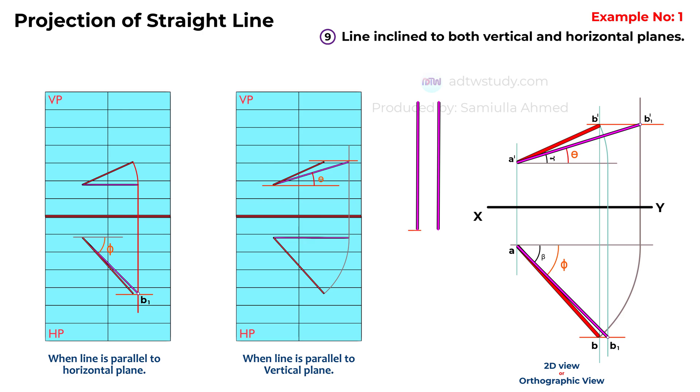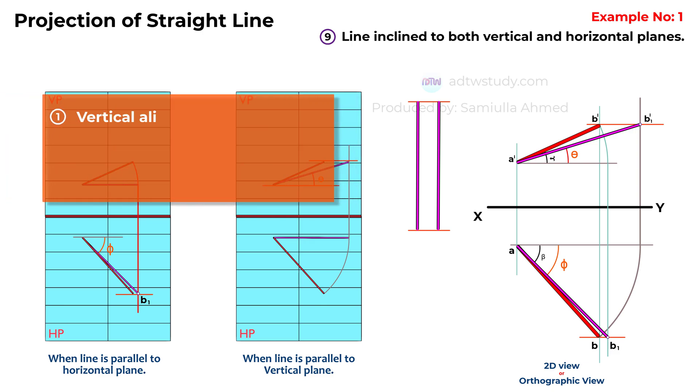This is how we find the true length of a line which is inclined to both the vertical and horizontal planes. Important key points to remember are: Vertical alignment of endpoints. The endpoints, A dash and A, as well as B dash and B, are aligned vertically. This alignment is crucial for accurate projection.